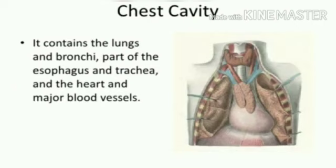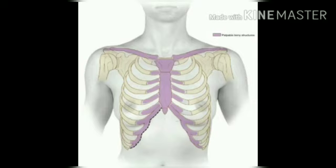Besides giving protection to the heart and lungs, ribs and the breast bone also help in breathing movements. You will also notice that while breathing, our chest cavity moves up and down.